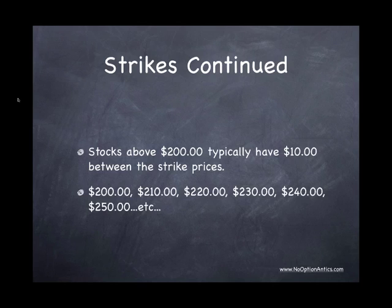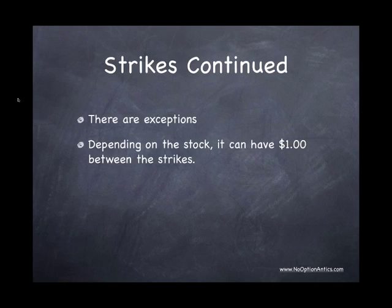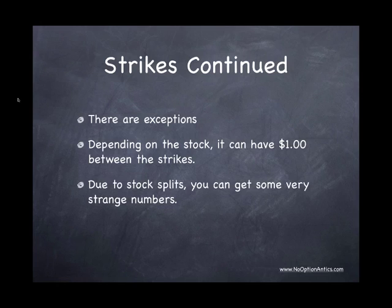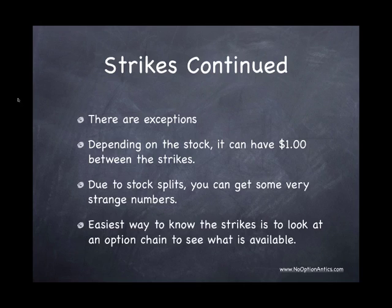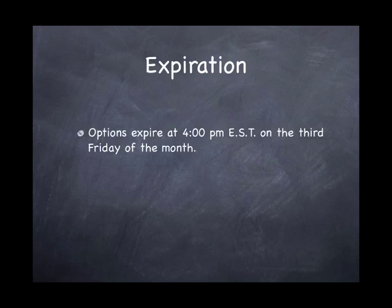Again, these are just guidelines. Some exceptions: some stocks have $1 in between the strike prices. If a stock splits, you can also see some very bizarre strike prices — I can recall seeing a $26.33 or $27.61 strike price due to a stock split. The only way to really know what options are available is to look at your option chain for the stock you're trading to see what options are available on that particular stock.